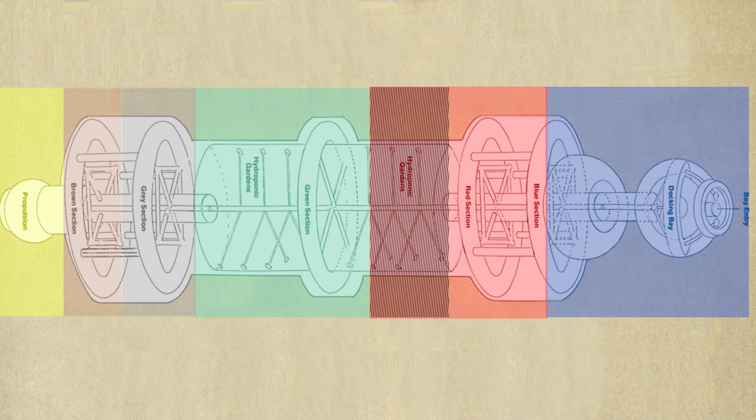From the bay entrance to the med lab is the blue sector. The rotation section before the hydroponic gardens is the red sector and the hydroponic gardens is the green sector, hence the name. The next rotation section is the gray sector and between the gray sector and the propulsion system, also referred to as the yellow sector, is the brown sector.